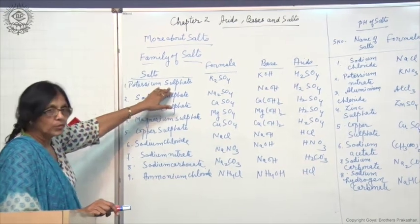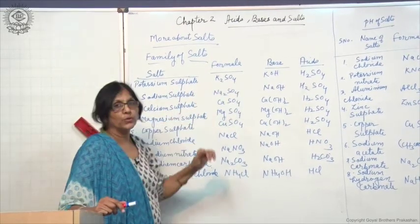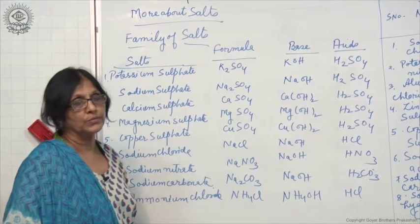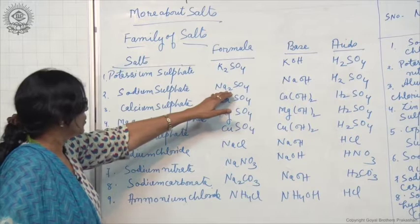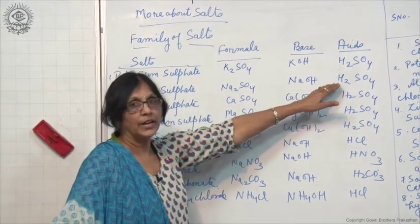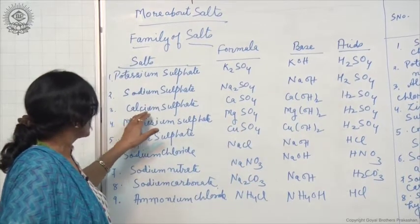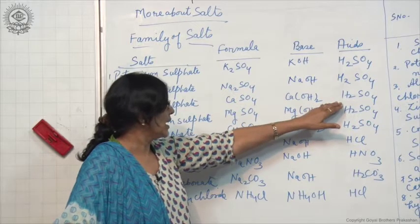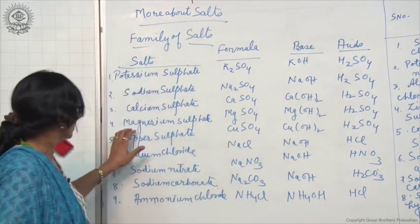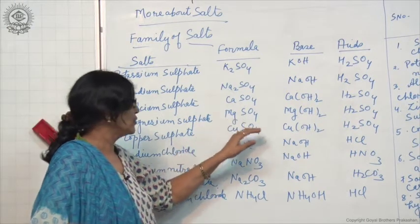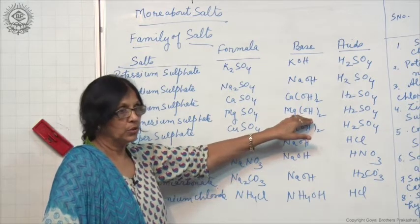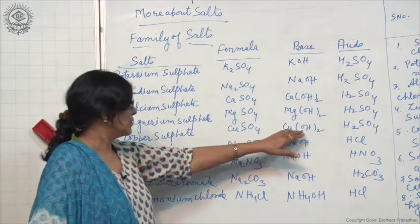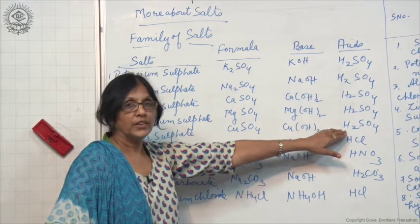Potassium sulphate: formula is K₂SO₄, formed from base KOH and acid H₂SO₄. Similarly, sodium sulphate: formula is Na₂SO₄, base NaOH and acid H₂SO₄. Calcium sulphate: formula is CaSO₄, base is Ca(OH)₂ and acid H₂SO₄. Magnesium sulphate: formula is MgSO₄, base is Mg(OH)₂ and acid H₂SO₄. Then copper sulphate: CuSO₄, base is Cu(OH)₂ and acid H₂SO₄.